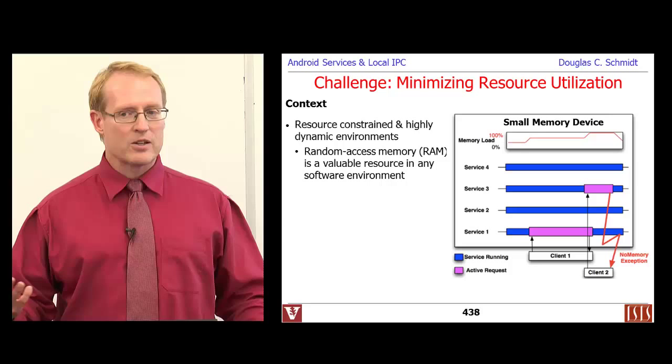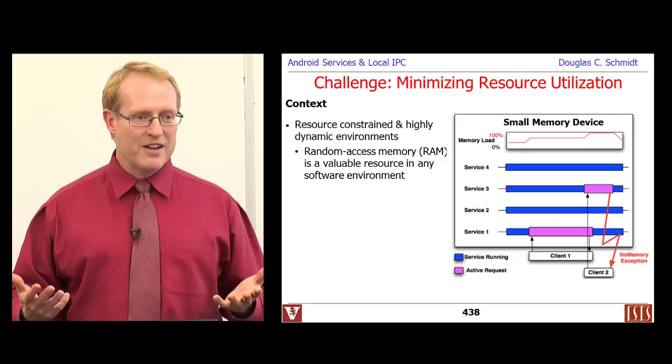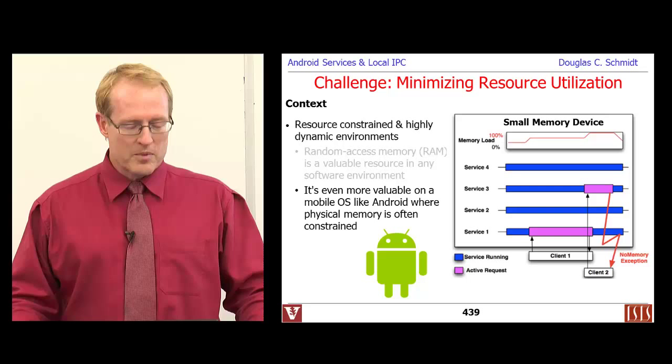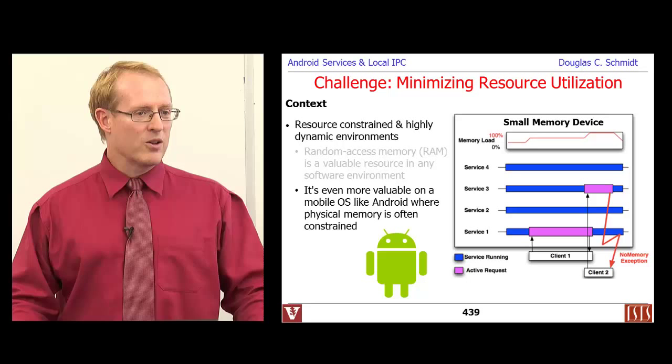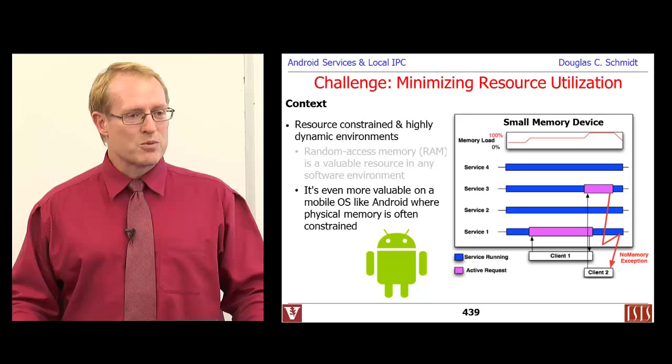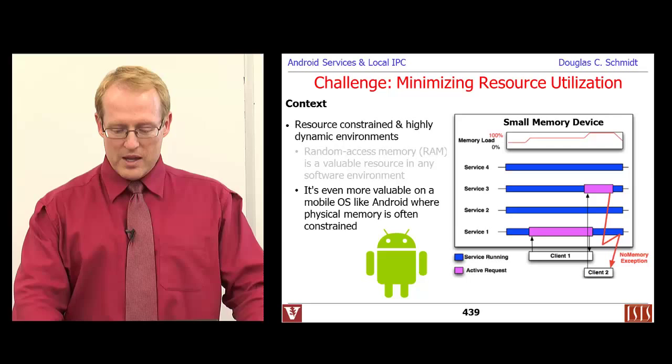For example, in many smartphone environments, random access memory — RAM — is a fairly precious commodity. Even though we've got a lot of memory now in Android and iPhone, you never can have enough, so you have to be careful not to over-allocate. In older versions of Android, they only had hundreds of megabytes, not gigabytes of memory, so it was even more important to think carefully about available resources.